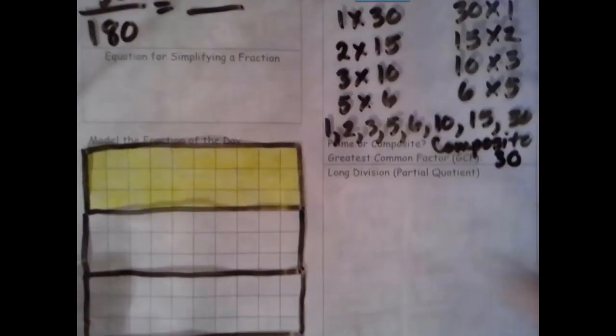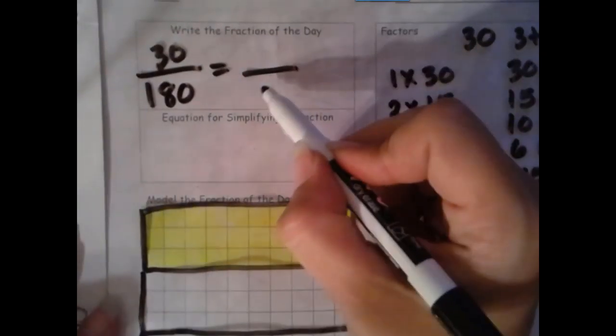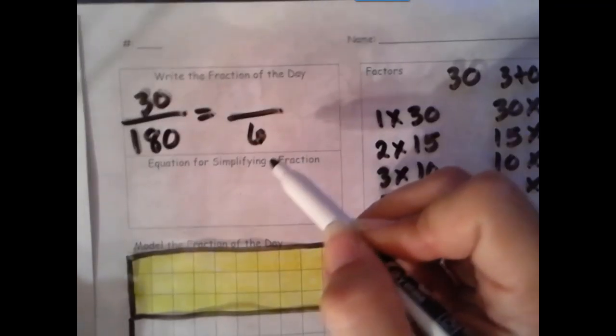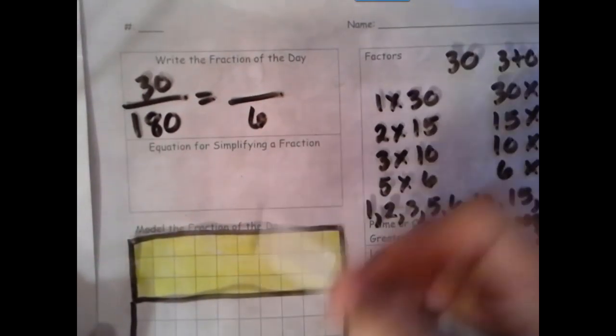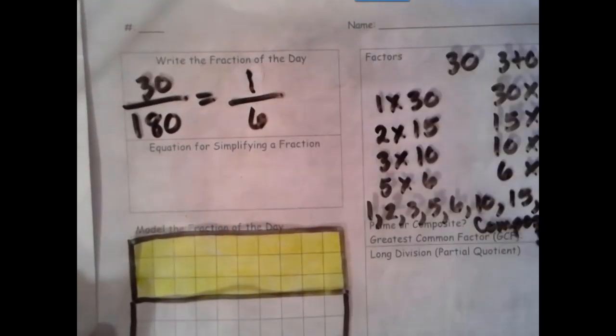Let's count up our total amount of groups of 30. We have 1, 2, 3, 4, 5, 6 total groups. So our denominator is now 6. And how many groups of 30 are shaded in? There is 1 group of 30 shaded in.